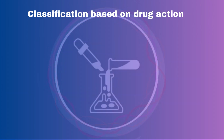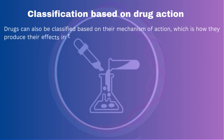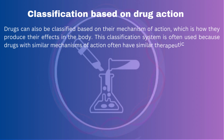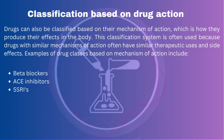Classification Based on Drug Action: Drugs can also be classified based on their mechanism of action, which is how they produce their effects in the body. This classification system is often used because drugs with similar mechanisms of action often have similar therapeutic uses and side effects. Examples of drug classes based on mechanism of action include beta-blockers, ACE inhibitors, and SSRIs.